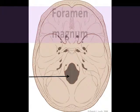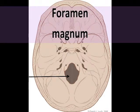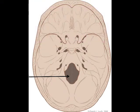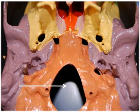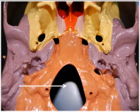Our first structure on the occipital bone is the foramen magnum, which literally means big hole. It's located on the inferior occipital bone, and it's the region where the medulla oblongata of the brain — the brain stem — connects with the spinal cord. The foramen magnum also allows passage of the vertebral and spinal arteries along with the accessory nerve, which is cranial nerve 11.